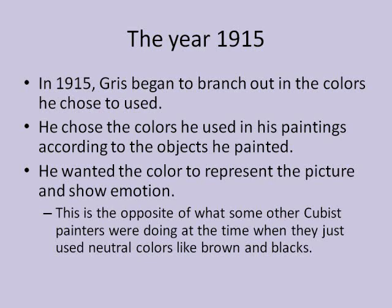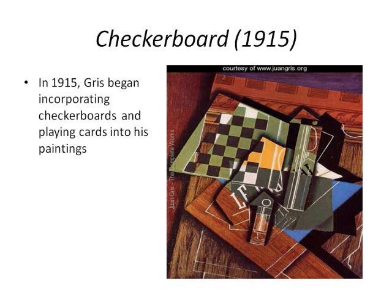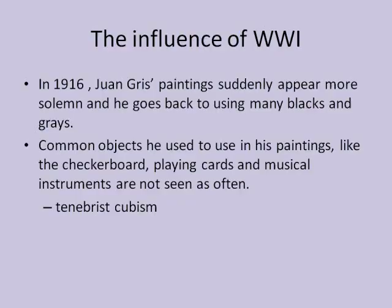In 1915, Gris began to branch out in the colors he chose to use. He chose colors based on what objects he painted and wanted the color to represent the picture and show emotion. This is interesting because at this time, many other Cubist artists painted neutral colors, and even Gris used to use mainly grays, blacks, browns, and greens. One example of a typical painting from around 1915 is called Checkerboard. We can see the techniques Gris used at this time, like the branching out in his use of color and the checkerboard motif. Gris also paints playing cards, which are a favorite motif that many of the Cubist artists included.